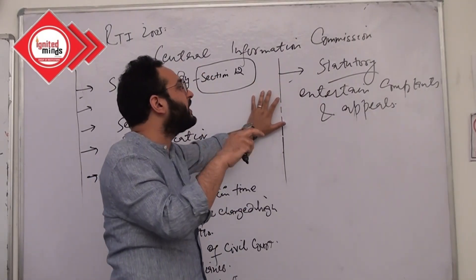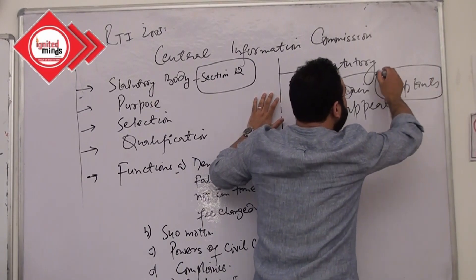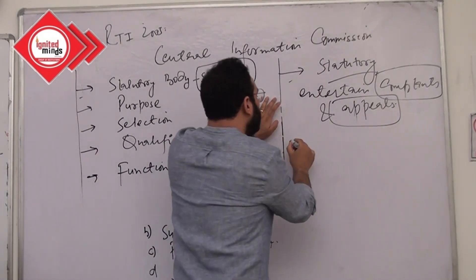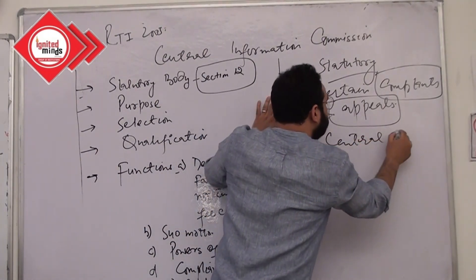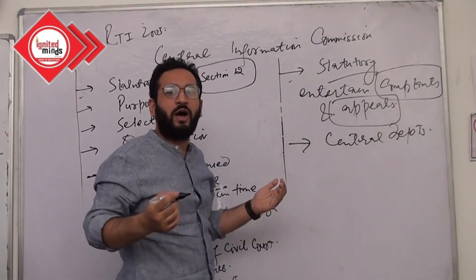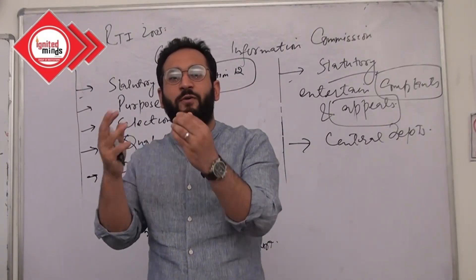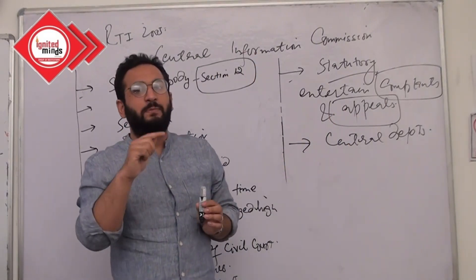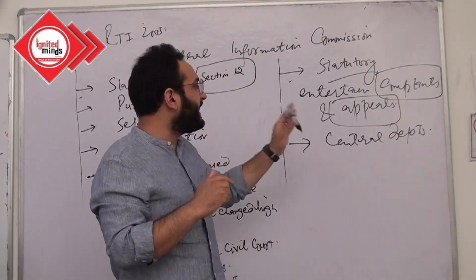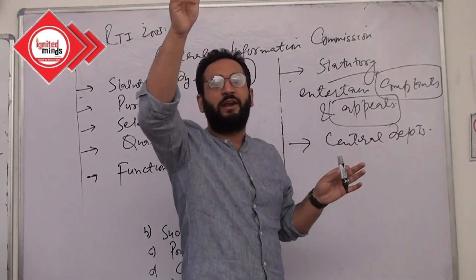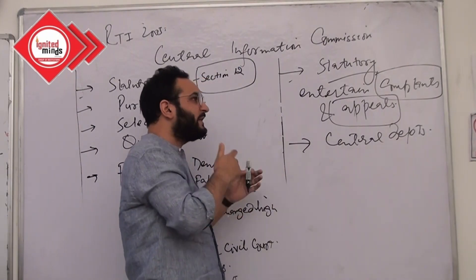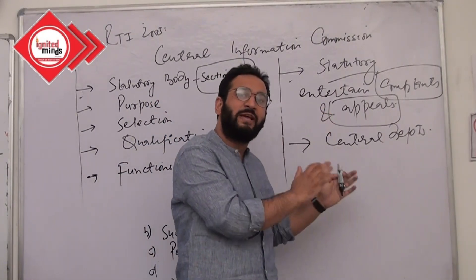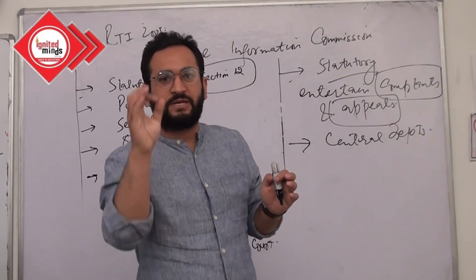The CIC relates to the centre, so it will receive complaints and entertain appeals in every matter connected to central departments and ministries — for example, foreign affairs. If you have any complaint about a passport office not giving you correct information, since passport is a central subject and a central department, you will go with that complaint to the Central Information Commission.